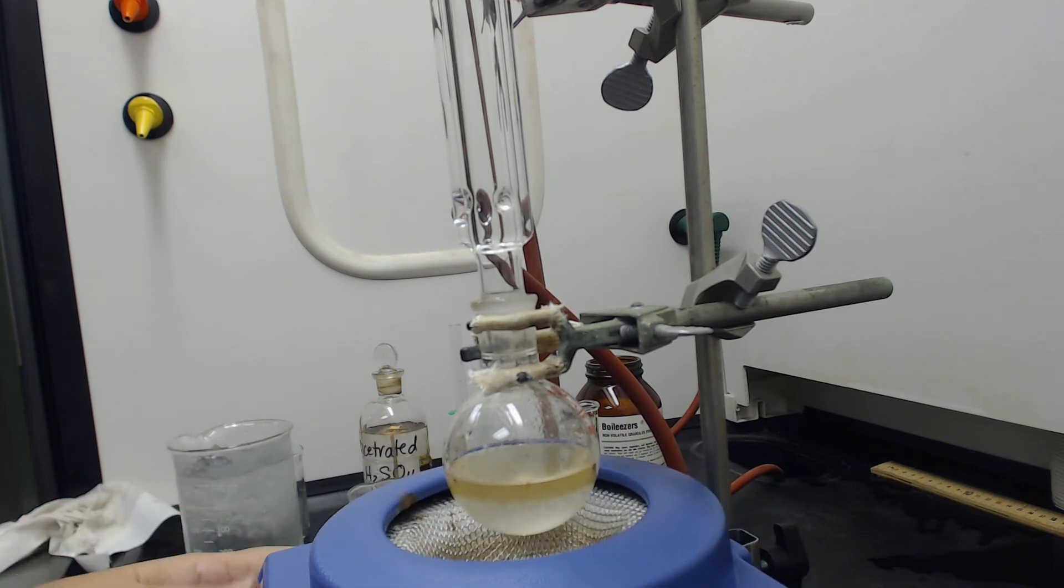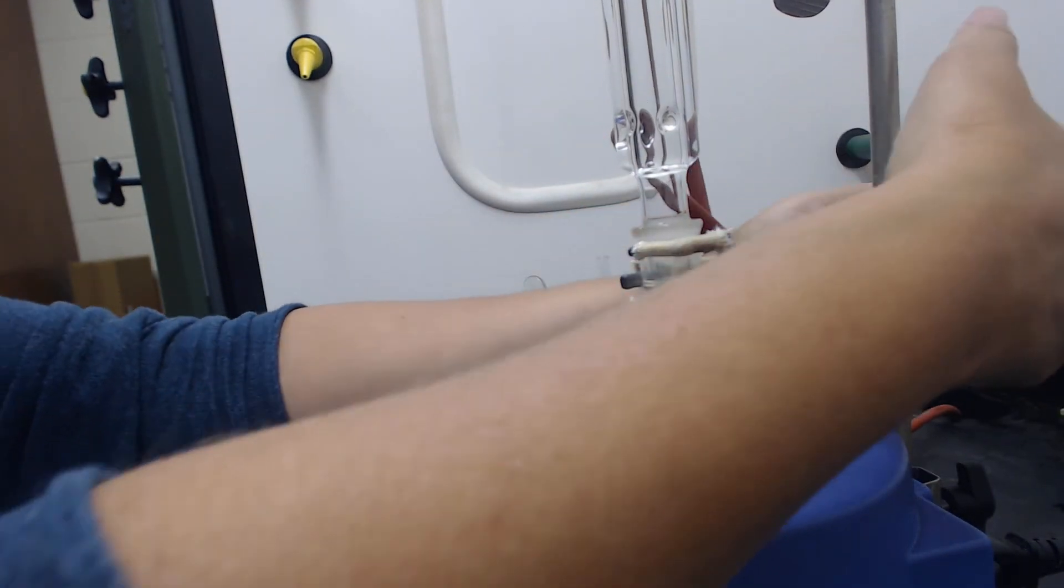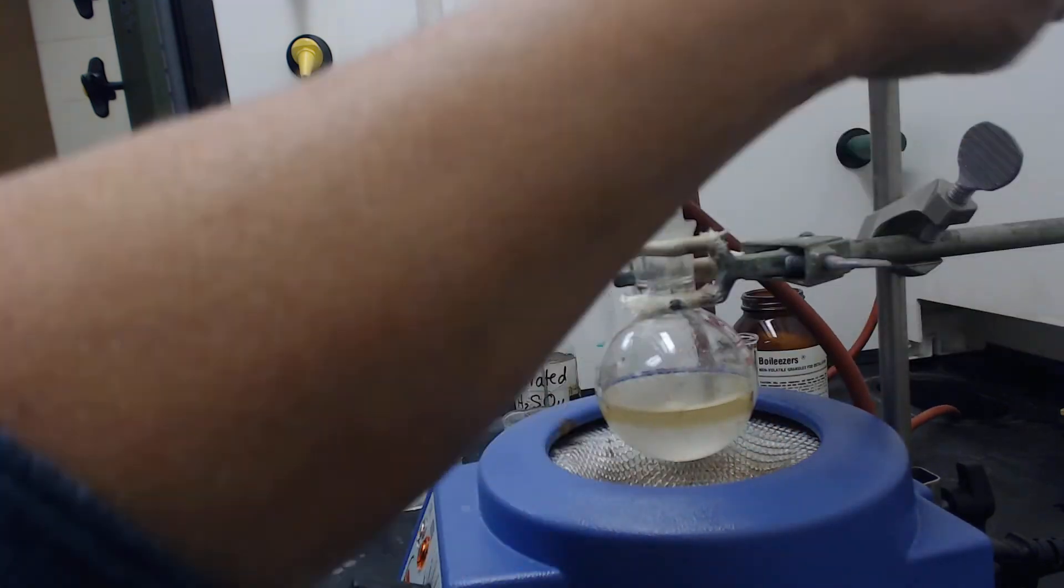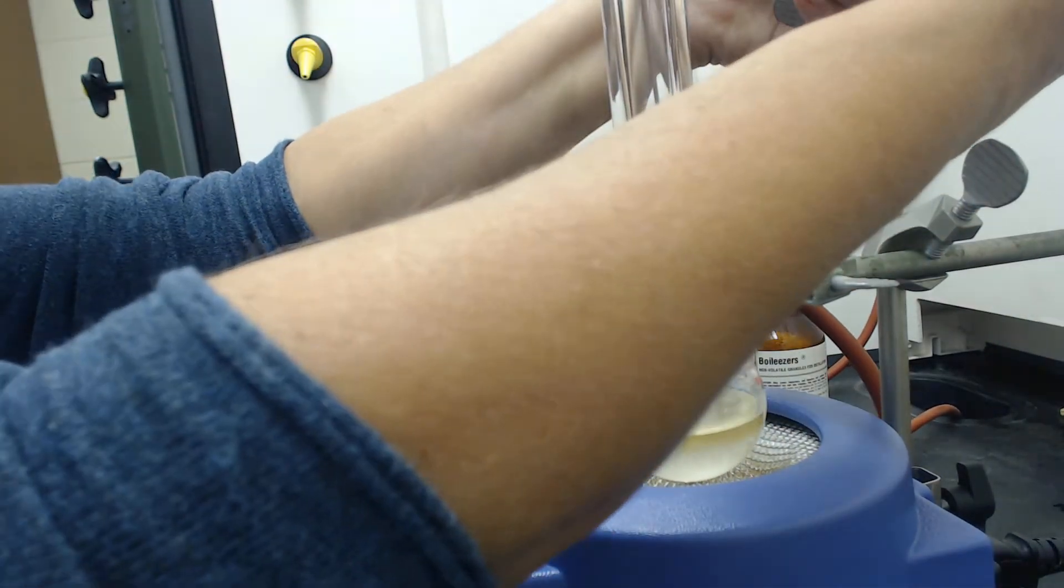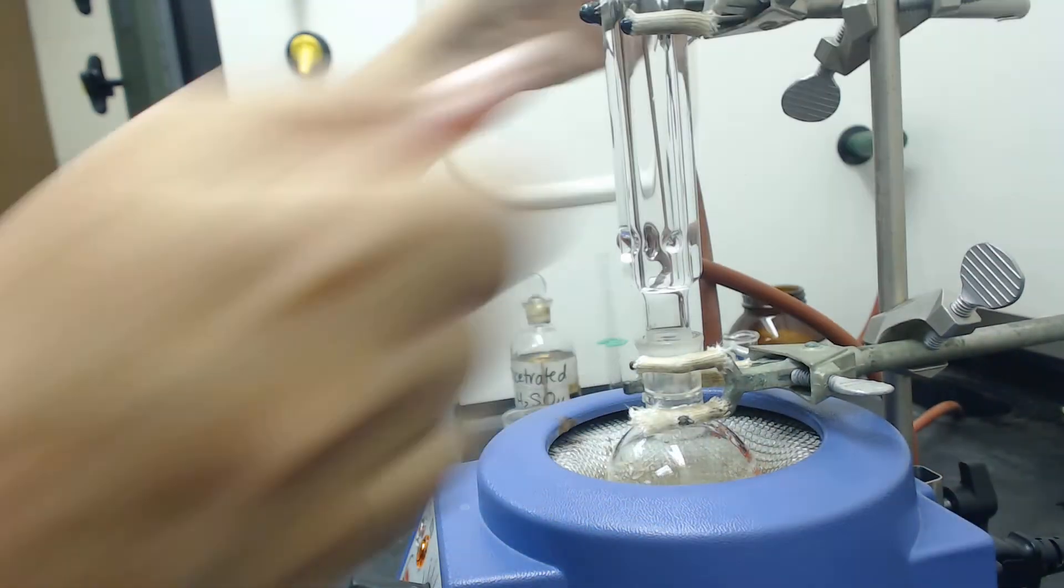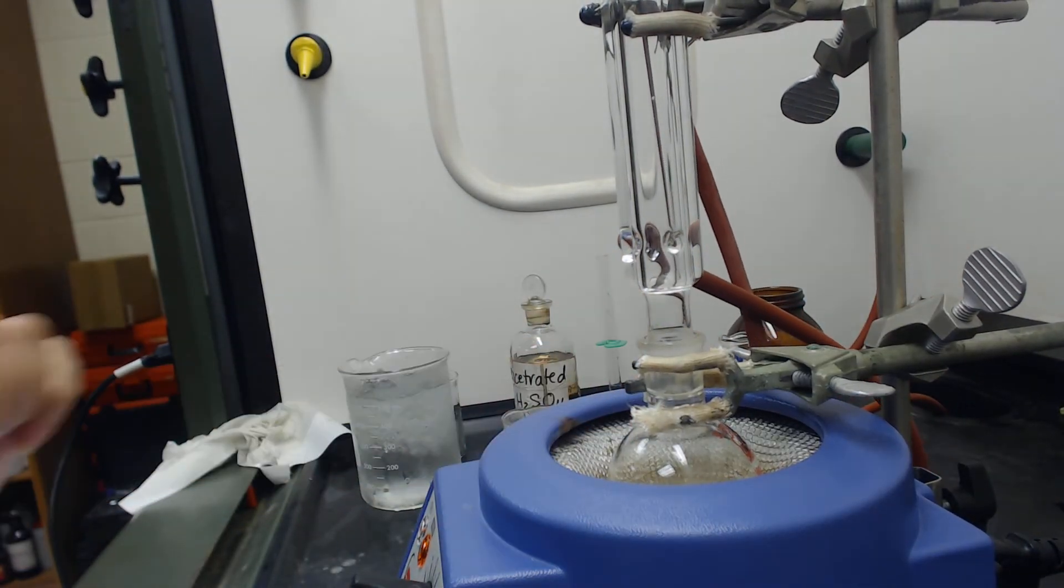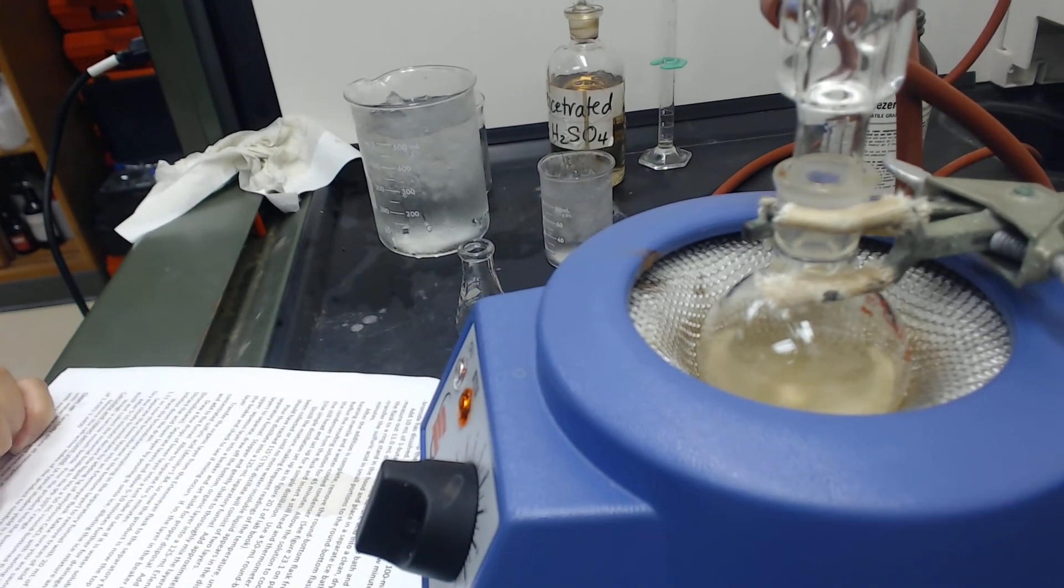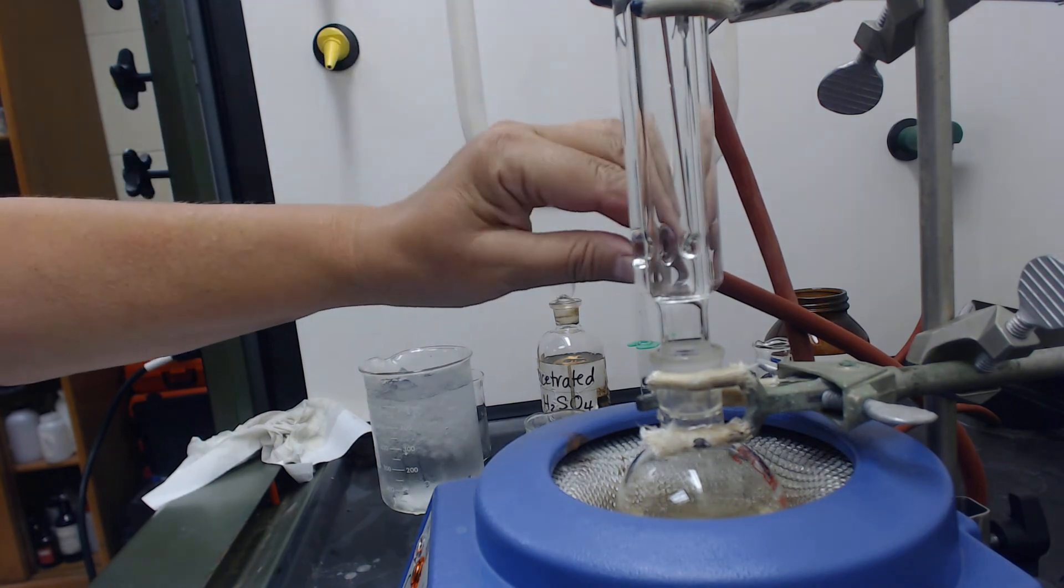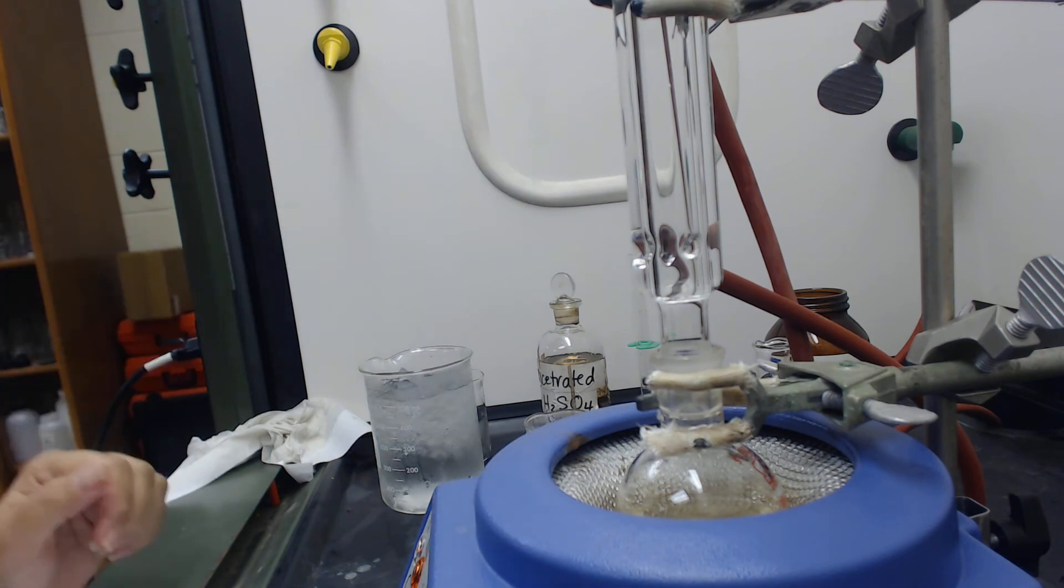What I'm going to do is start my heating mantle. I'm going to have to move this whole contraption down. Now I'm going to clamp it so this is nice and nestled into the heater. I've got the cold water running. The cold water's got to start at the bottom and go out from the top. Now I'm going to just turn on the heater and let it start to boil.